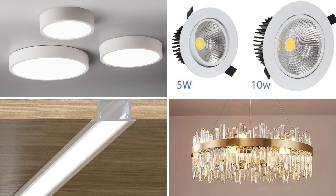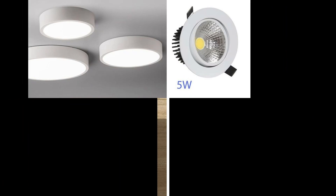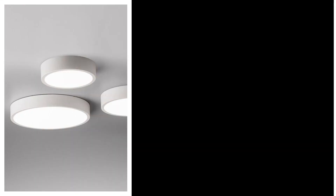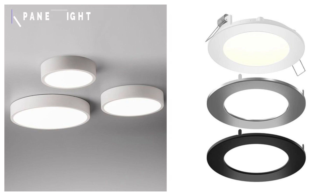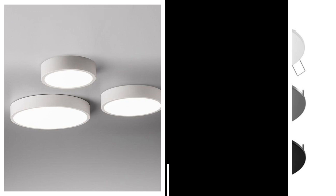In interior design, we mainly use four types of lights. Panel lights are put in the ceiling, come in recessed as well as surface-mounted models, and have a very wide angle of illumination. These lights are used for general lighting.